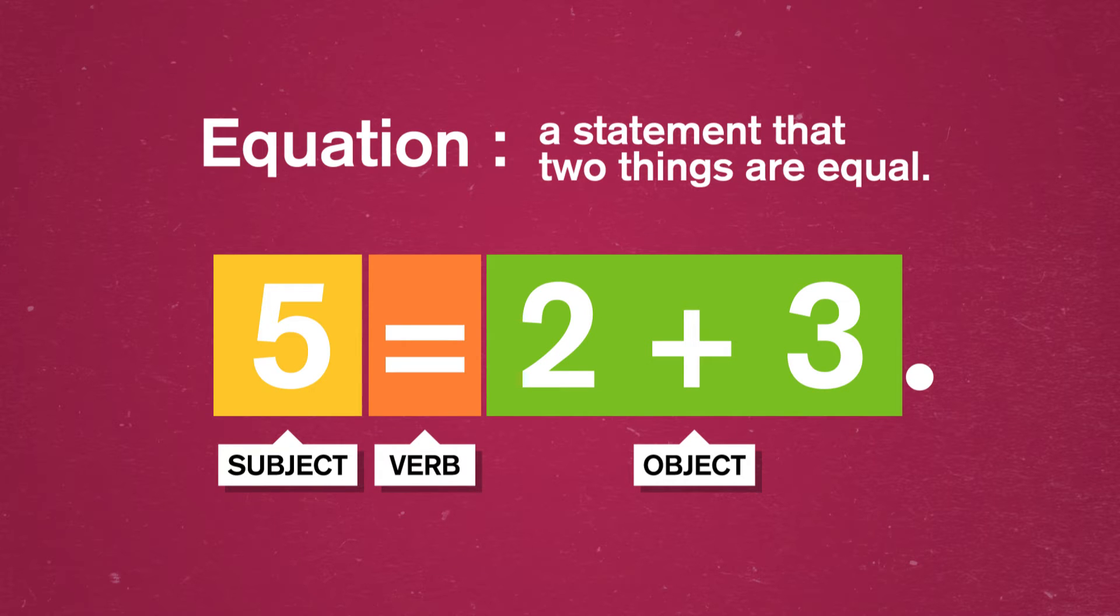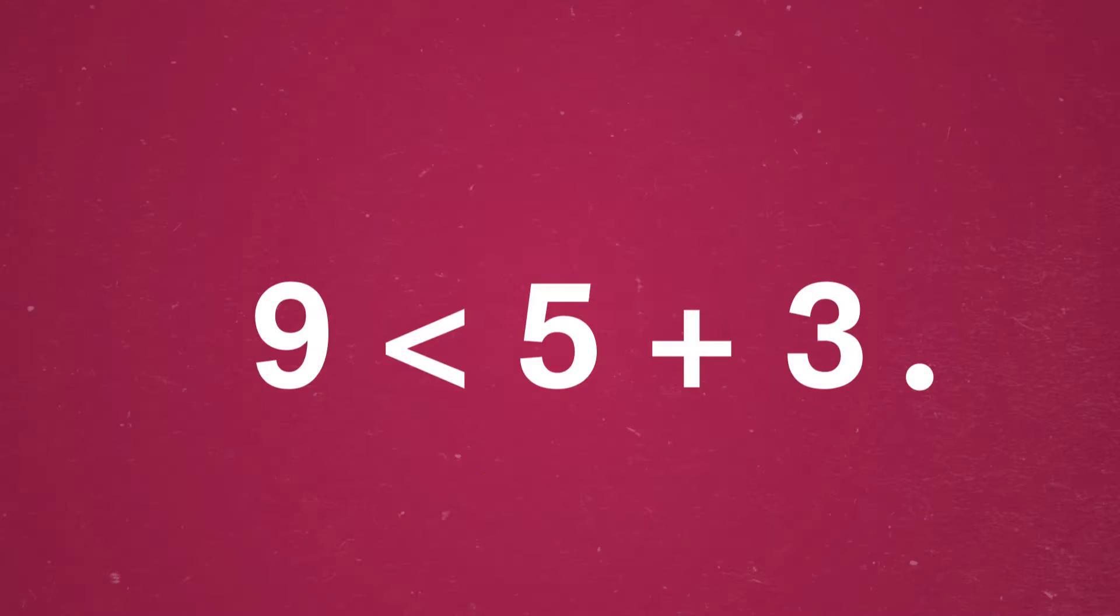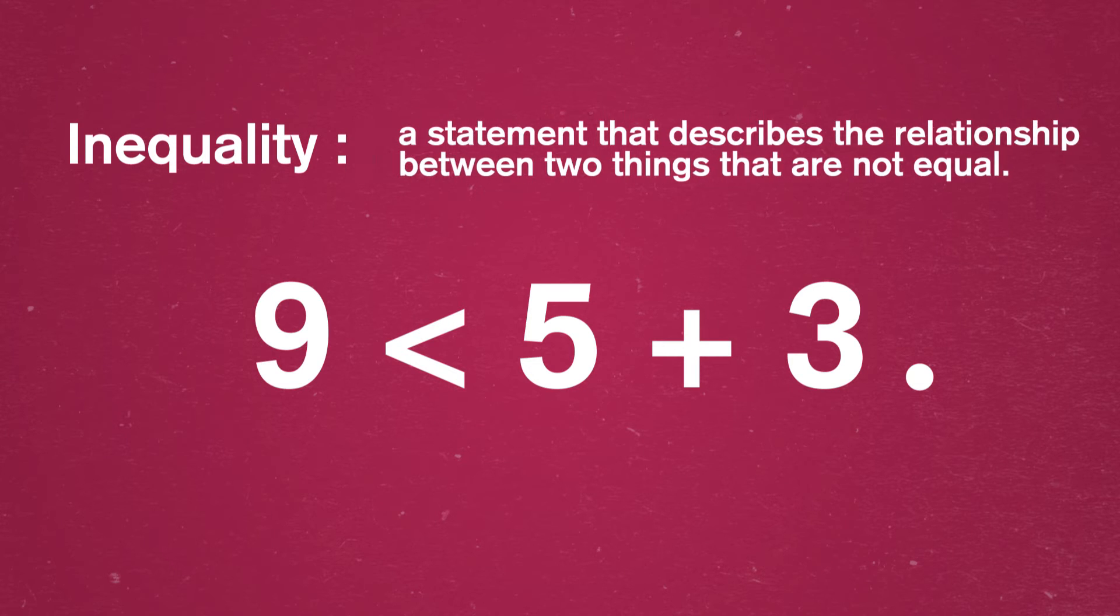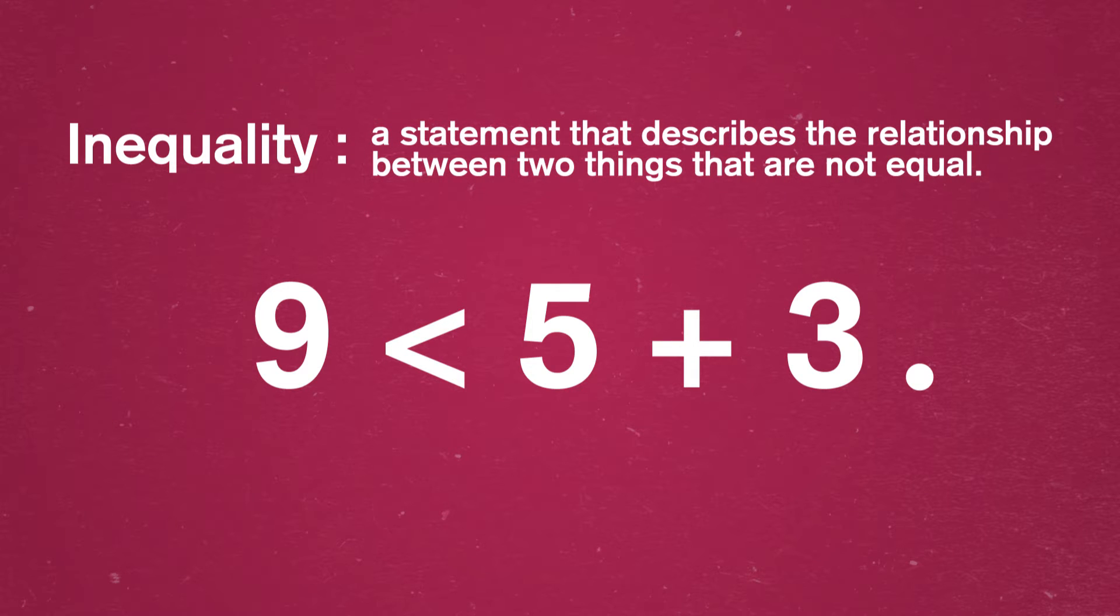There's also an equation, which is just a statement that two things are equal. In fact, if you read mathematics papers, you'll see that all the formulas and equations are written with punctuation, because they are sentences. Over time, we've developed a shorthand for efficiency, and that's part of what can make math confusing to look at. Here's another complete sentence that's an inequality, or a statement that describes the relationship between two things that are not equal. 9 is less than 5 plus 3, period.